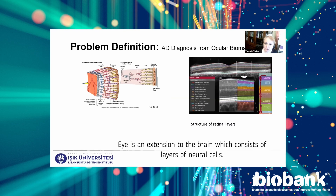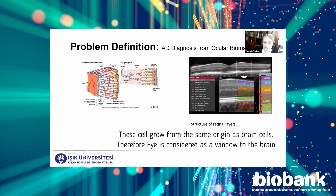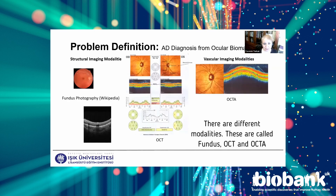The retina is an extension of the brain which consists of layers of neural cells. These cells grow from the same origin as brain cells. Therefore, the retina is considered as a window to the brain. There are different modalities, and these are called fundus, OCT, and OCT angiography.